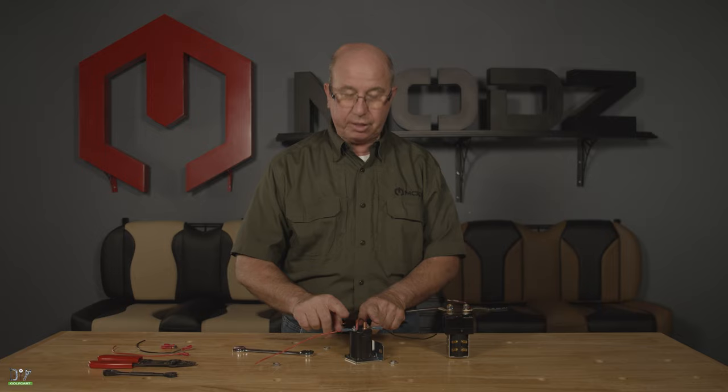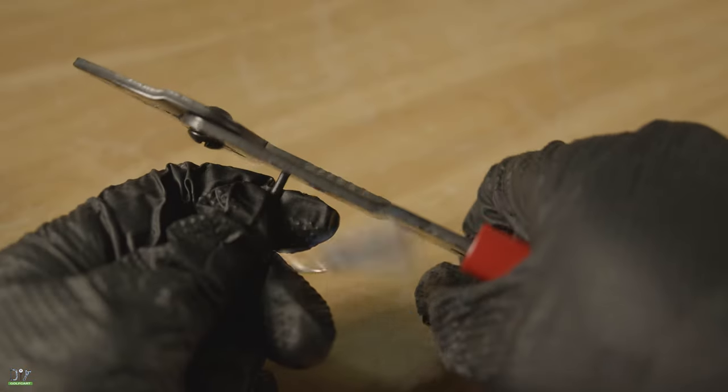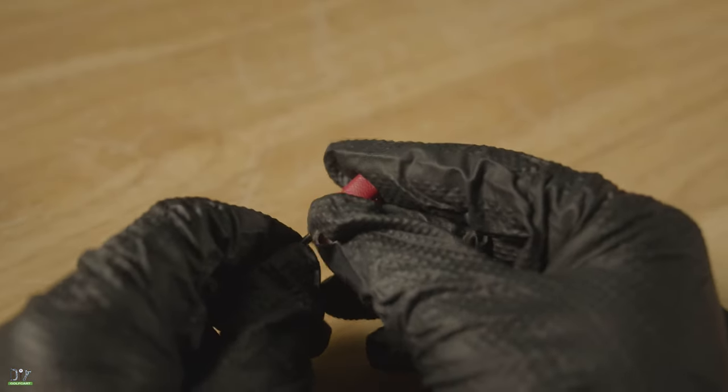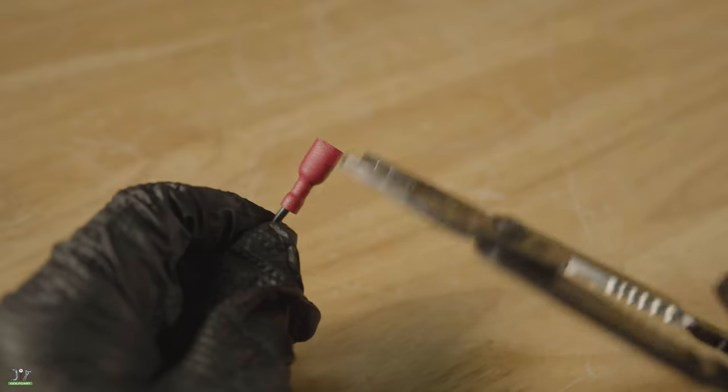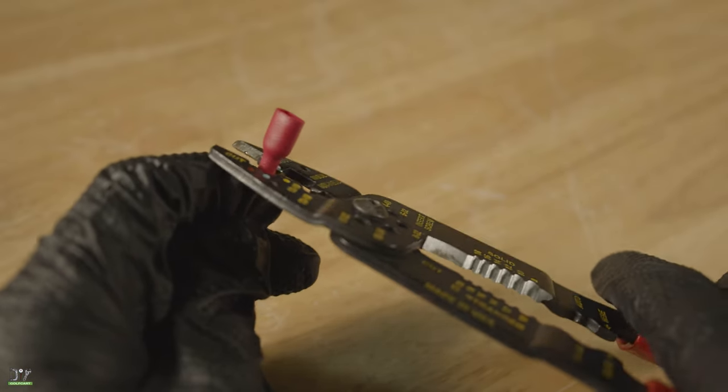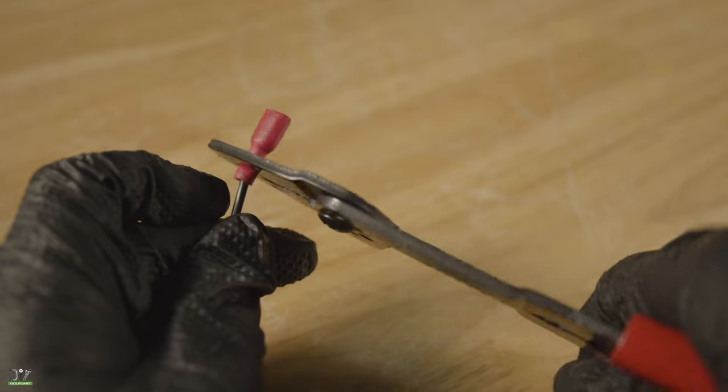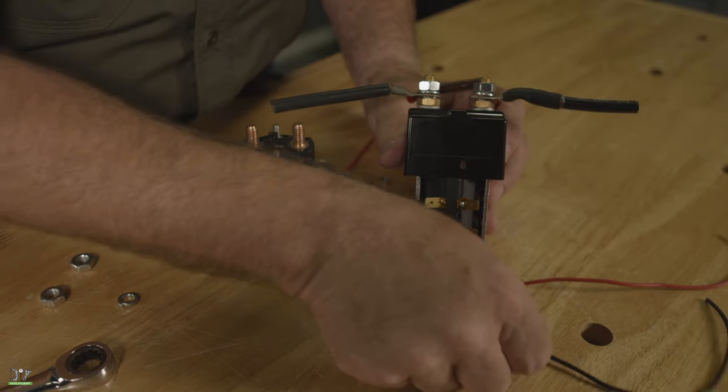Now we'll change over the small wires. We'll replace the ring terminal with a female spade. We'll have our negative and our positive. They can go on either one.